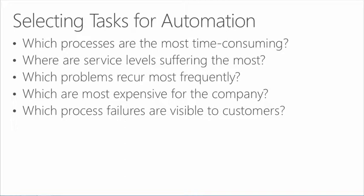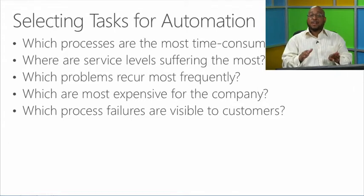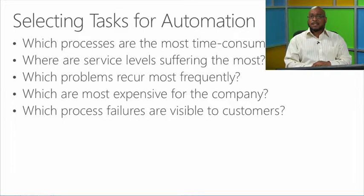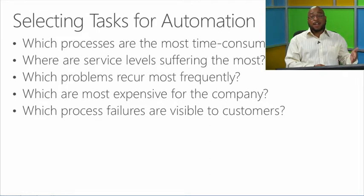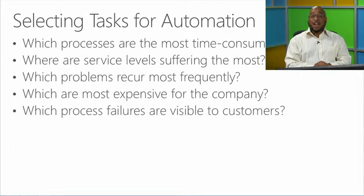Which problems happen most frequently? That's a big one. Identify a fix and apply that same fix every time it occurs, reducing errors and time while increasing productivity. Understand which are the most expensive services for the enterprise so we can reduce time and get better ROI. Identify which processes are failing most visibly to end users — errors visible to end users cause significant problems in the perception of how IT delivers services, and fixing them builds confidence and user dependence on IT.